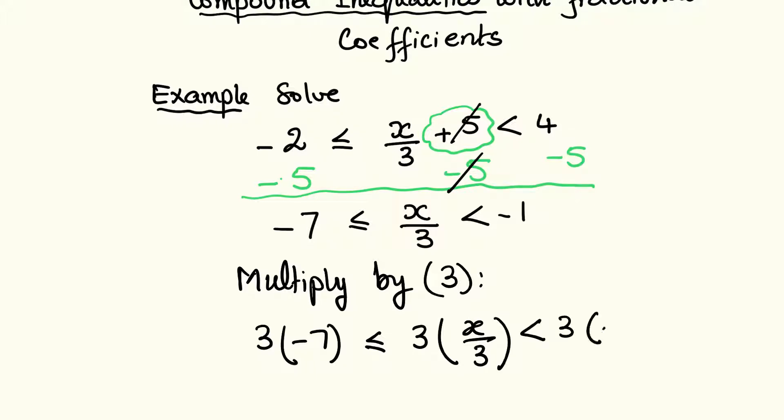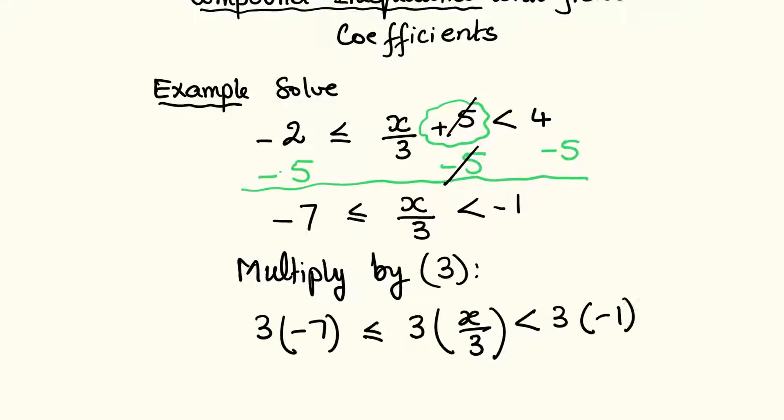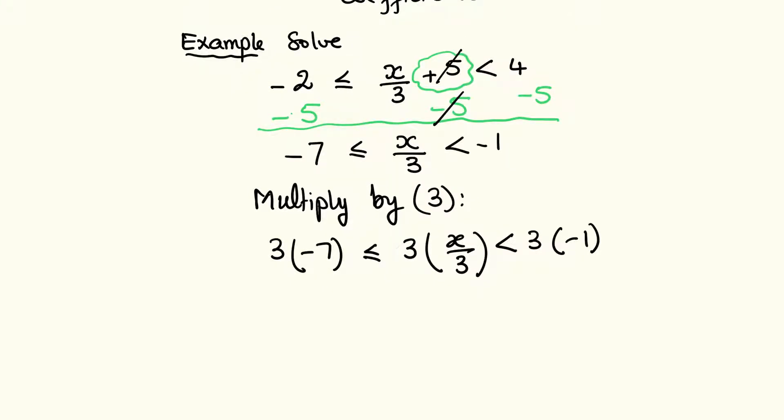times -1. And of course this is -21 ≤, and 3 multiplied by x/3, the 3 and the 3 will give us 1 so it's basically x, and on this side 3...